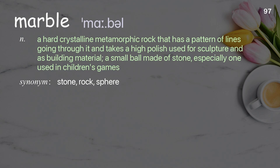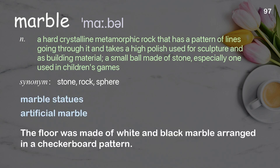Marble: a hard crystalline metamorphic rock with a pattern of lines, used for sculpture and as building material; a small ball made of stone used in children's games. Examples: marble statues, artificial marble. The floor was made of white and black marble arranged in a checkerboard pattern.